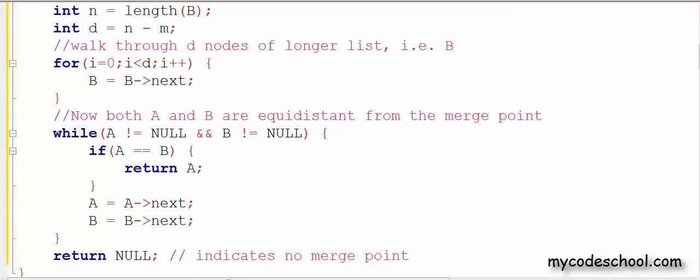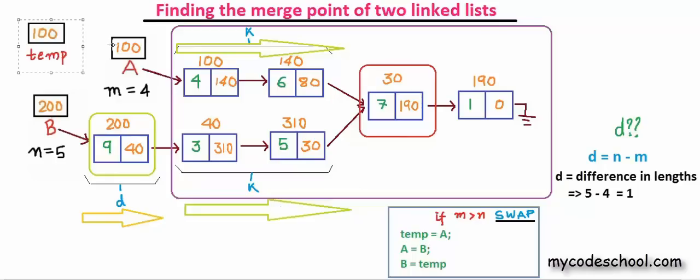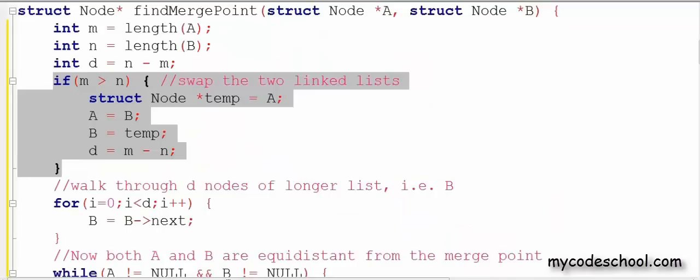The second corner case is, what if A was a longer list? Remember, here we assume that B is a longer list. So our code would fail if M is greater than N and we need to handle it separately. What we could do is, simply swap both the lists. This is the code to swap any two things. What it does is, assigns the value of A to any temporary variable, updates the value of A so that it points to this first node of the second linked list and then update the value of B from temp to make it point to this node. I have reflected those changes in this code here.